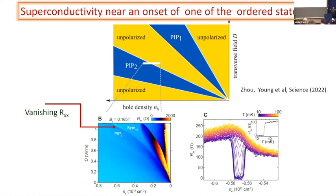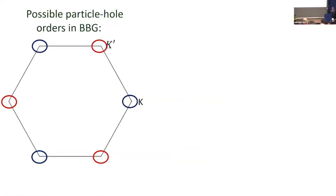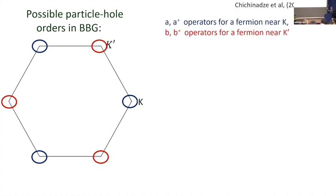Let's take an agnostic point of view and ask what kinds of orders you can have in this system. Let's assume we have one pocket near the K' point, one pocket near the K point — by symmetry there are three K pockets and three K' pockets in the Brillouin zone. The problem of finding orders is straightforward: you have two sets of fermions, call them A and B, and you ask what bilinear fermion order parameters can develop.